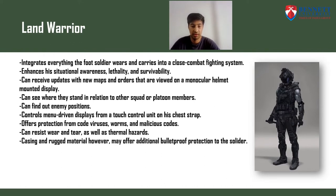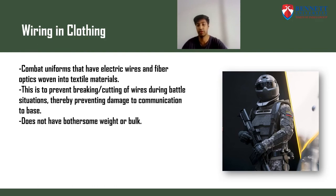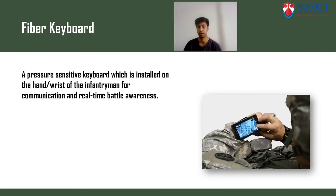The Land Warrior system can resist wear and tear as well as thermal hazards, and its casing and rugged material may offer additional bulletproof protection to the soldier. Wearable clothing combines uniforms with electric wires and fiber optics woven into textile materials, preventing breaking and cutting of wires during battle and thereby preventing damage to communication back to military base, without bothersome weight or bulk. Fiber keyboards are pressure-sensitive keyboards installed on the wrist of soldiers for communication and real-time battle awareness.